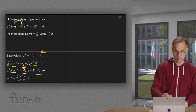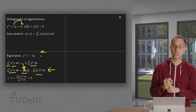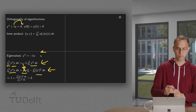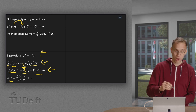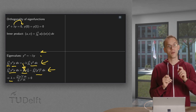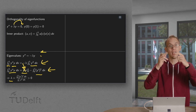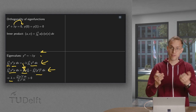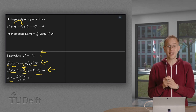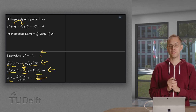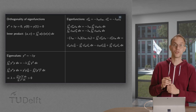We are left with minus the integral of y prime squared, which is a negative number due to the minus sign, while the integral itself is positive. This equals minus lambda times the integral of y squared. Solving for lambda, we get lambda as a quotient of two integrals. Both integrals are positive — the numerator has y prime squared and the denominator has y squared — so we conclude that lambda is positive.